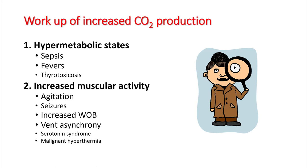Whenever you think about increased CO2 production, consider two conditions: is the patient hypermetabolic, or are they having increased muscular activity? Hypermetabolic states include sepsis, fever, and thyrotoxicosis, while muscular activity increases in patients with agitation, seizures, increased work of breathing, ventilator asynchrony, and a couple of rare syndromes.